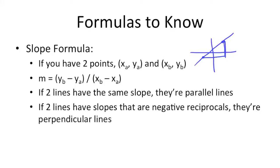So if two lines have the same slope, they're parallel lines. And if two lines have slopes that are negative reciprocals, they're perpendicular lines.